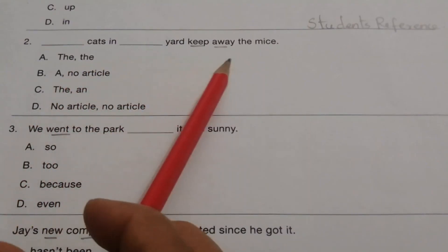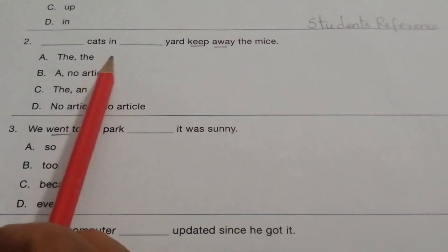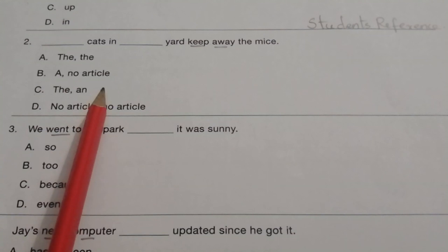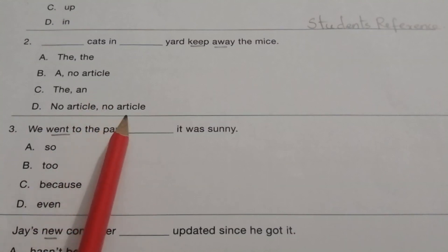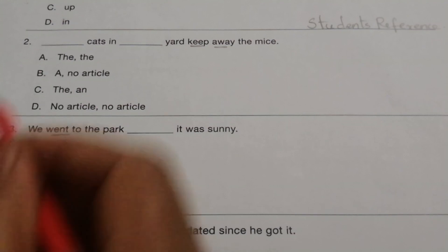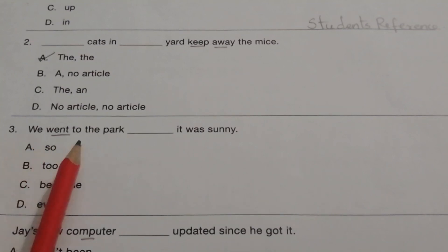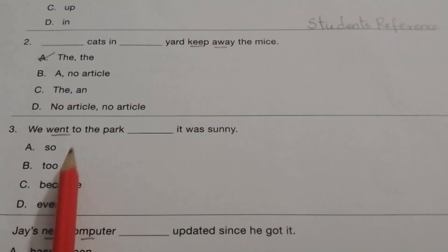Question 2: 'Dash cats in dash yard keep away the mice.' The options are: the/the, a/no article, the/and, no article/no article. The answer is A — the/the: 'The cats in the yard keep away the mice.' Question 3: 'We went to the park dash it was sunny.' The options are so, too, because, even. The answer is C — because: 'We went to the park because it was sunny.'